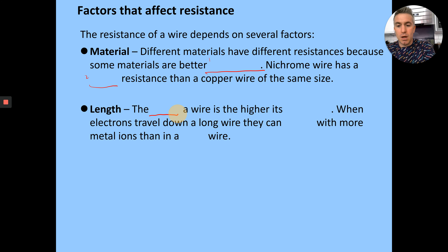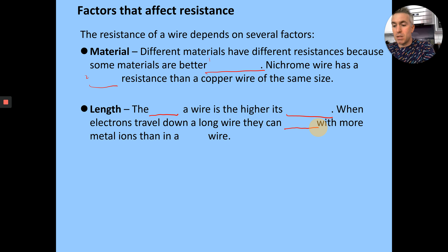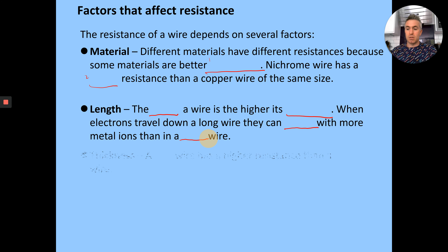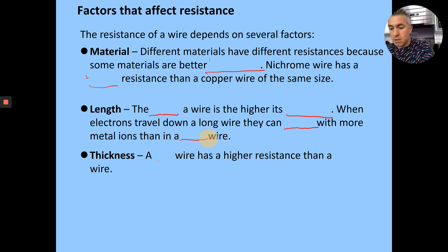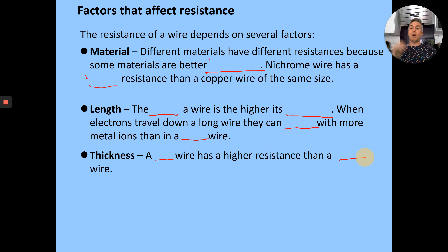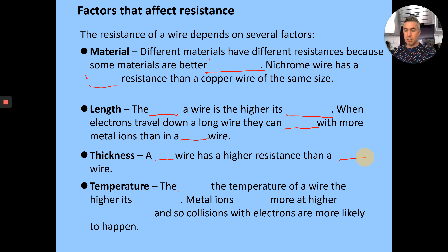Length: the longer the wire, the higher its resistance. When electrons travel down the wire, they collide with more metal ions than in a shorter wire. And for thickness: a thin wire has a higher resistance than a thick wire. The last factor is temperature: the higher the temperature of a wire, the higher its resistance. Metal ions vibrate more at higher temperatures, and so collisions with electrons are more likely to happen.